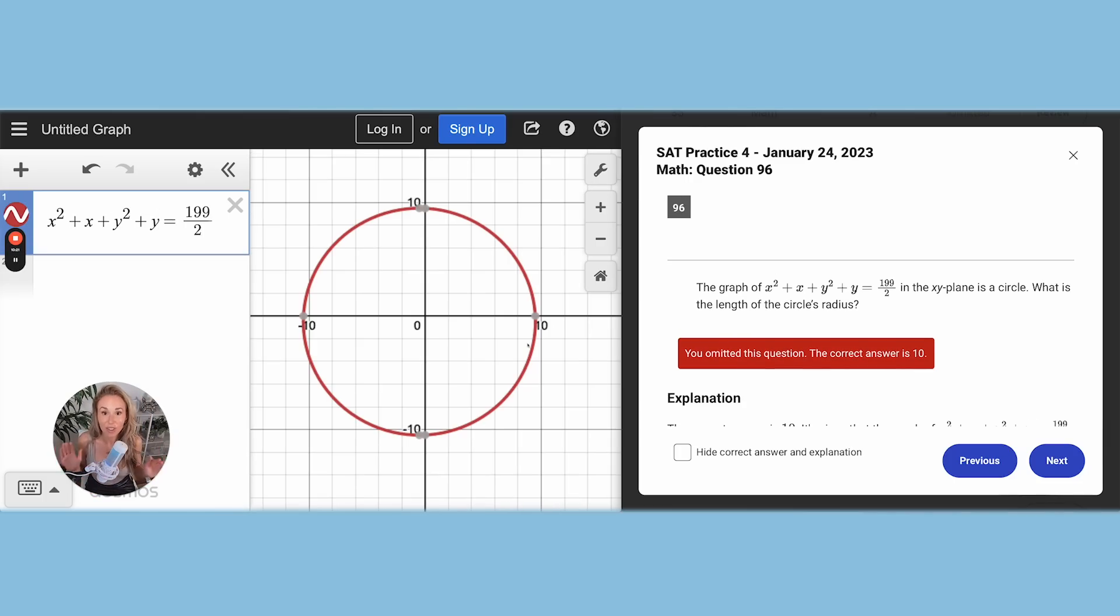All right guys. So we have the circle graphed and as you can see, it's a little off-centered. So be very careful. You can't assume the center is at zero and then just go, oh, okay, so it's going to be a radius of 9.487. Don't do that because of course they're going to try to throw you off and make it a little bit different than what you would assume.